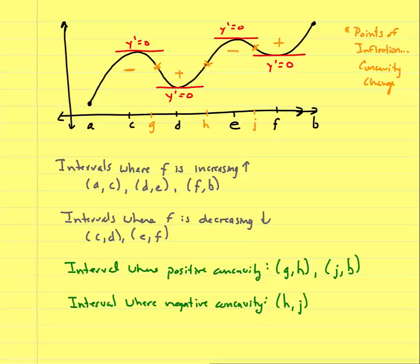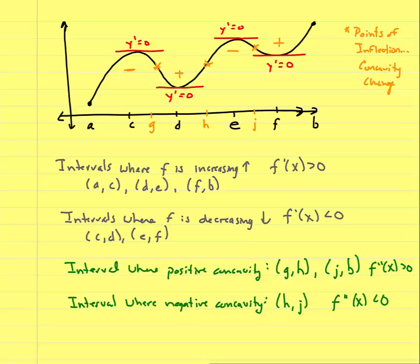It's important to tie together increasing, decreasing, and concavity. Increasing means the derivative is positive; decreasing means the derivative is negative. Positive concavity occurs where the second derivative is positive, and negative concavity occurs where the second derivative is negative. We haven't worked on that formally yet, but I want you to know those definitions so when we get there, you'll have a pictorial idea of what they mean.